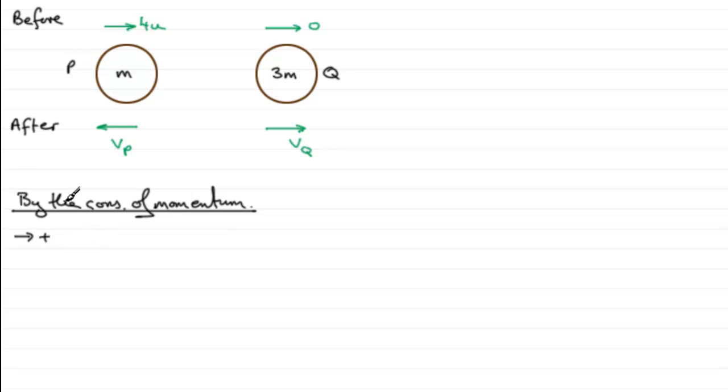So in the usual way, then we've got momentum before impact equals the total momentum after impact. And the momentum before impact is going to be the momentum of P, which is the mass m times the velocity 4u. And then we've got plus the momentum of Q. Well, that's going to be simply zero because it's the mass 3m times the velocity 0. And that equals now the final momentum. So the momentum of P now is going to be m multiplied by negative VP, because going in the opposite sense. And then we've got the momentum of Q, which is going to be 3m times VQ.